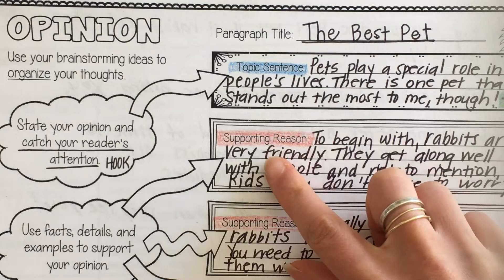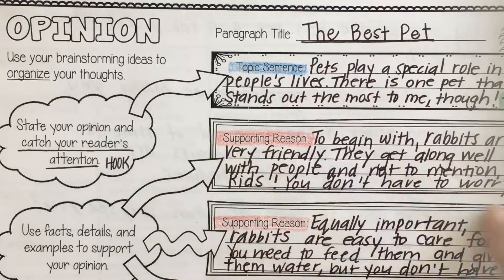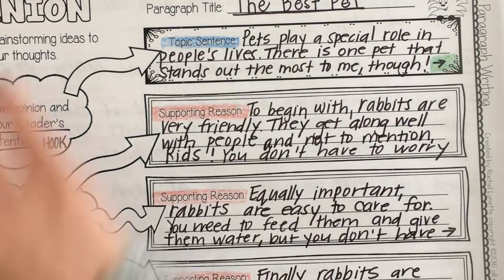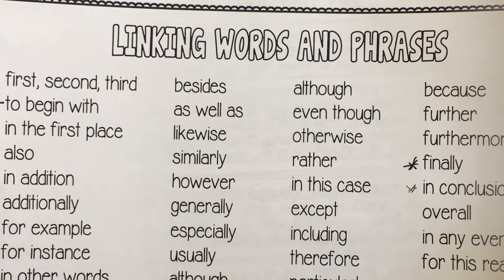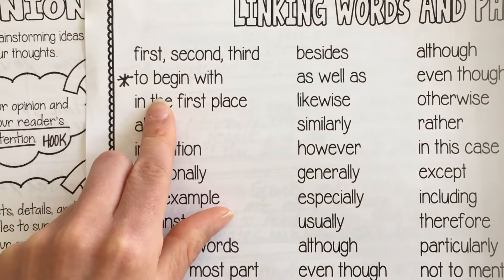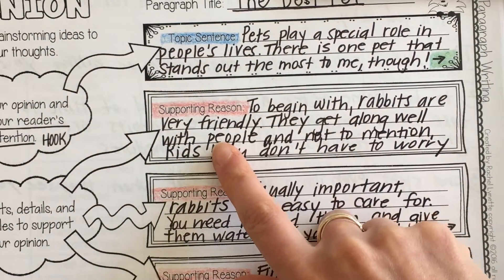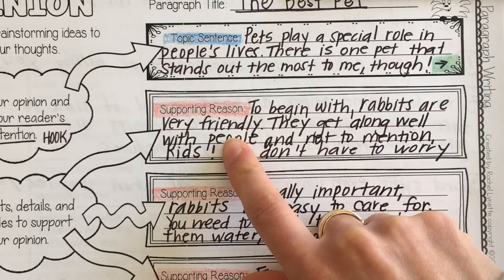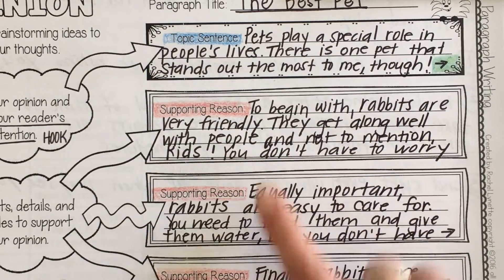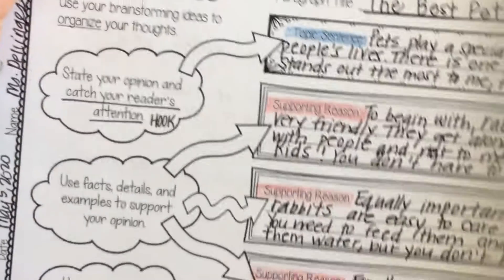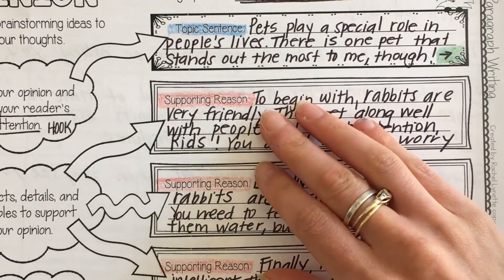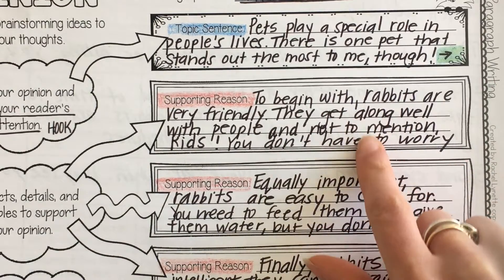After that I need to slow down and come to a stop with my supporting reason, which should support my topic sentence — why I think a rabbit is the best animal. I used this linking words and phrases resource from your packet so I don't always use 'first, second, third.' I started with 'to begin with.' I wrote: 'To begin with, rabbits are very friendly. They get along well with people and not to mention kids. You don't have to worry about a rabbit being aggressive or biting you.' That was my first supporting reason, and I also gave extra details to explain why they're so friendly.